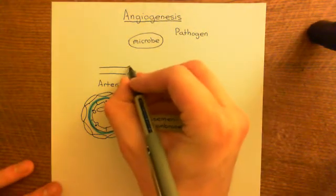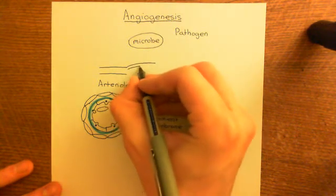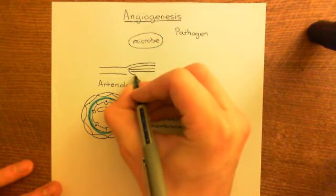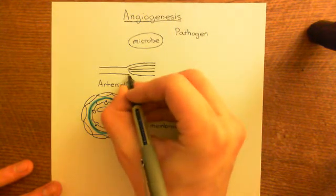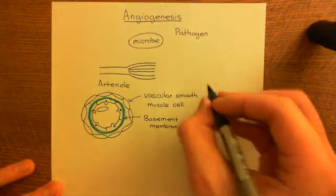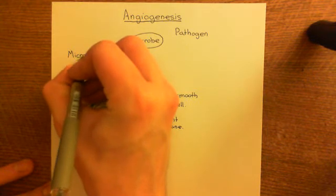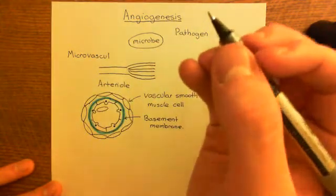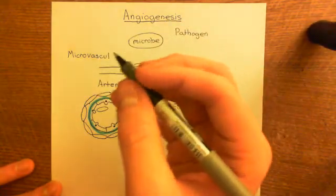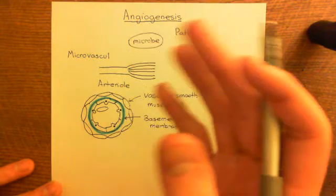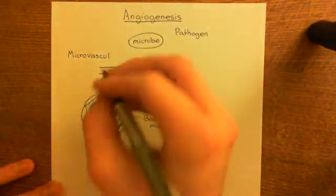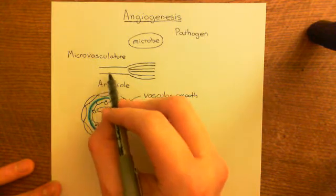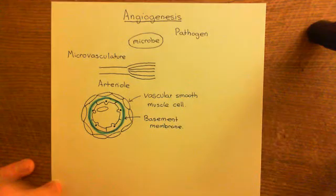The arteriole is going to split down into smaller blood vessels — these are the business end of the microvasculature. All of the blood vessels we're talking about are known as microvasculature. The macrovasculature refers to the arteries and veins you learn about in anatomy: the vena cava, the aorta, the renal artery, the radial artery, the saphenous vein. The microvasculature are the blood vessels within each little tissue: arterioles, capillaries, and then post-capillary venules.